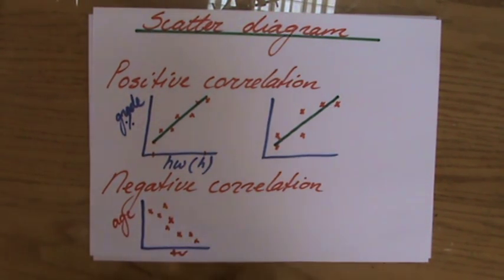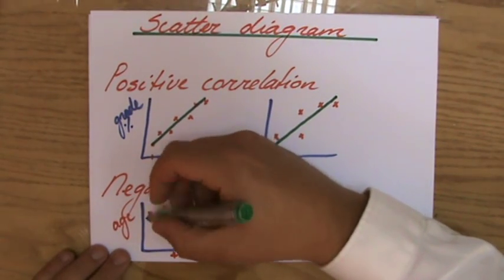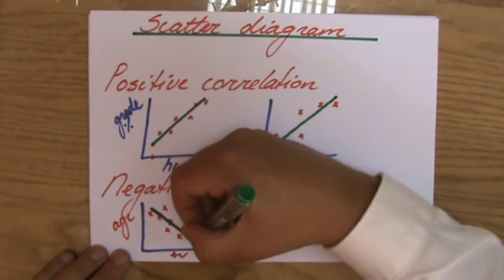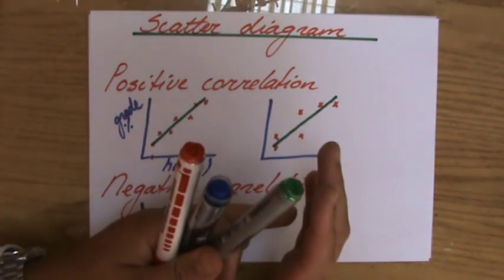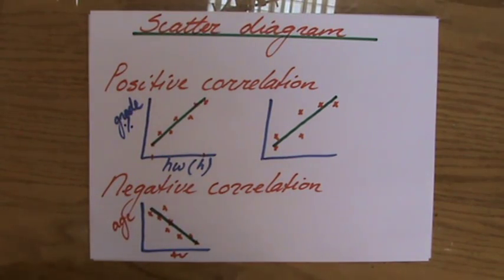So you could say there is a negative correlation because it's going down. You see that, a line of best fit going down, a negative correlation, quite strong. And of course you can also have a weaker negative correlation.